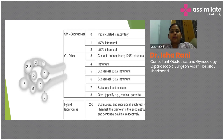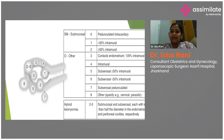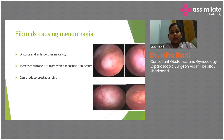If a fibroid is deeply embedded in the myometrium, like submucosal type 2, it is very difficult to perform hysteroscopic myomectomy, so mapping is critical when planning treatment. In the PALM-COEIN classification, the diagnosis is written as AUB-LSM. On hysteroscopy, the myoma appears as an outpouching but is less fluffy and more firm in appearance, helping differentiate fibroid from endometrial polyp.